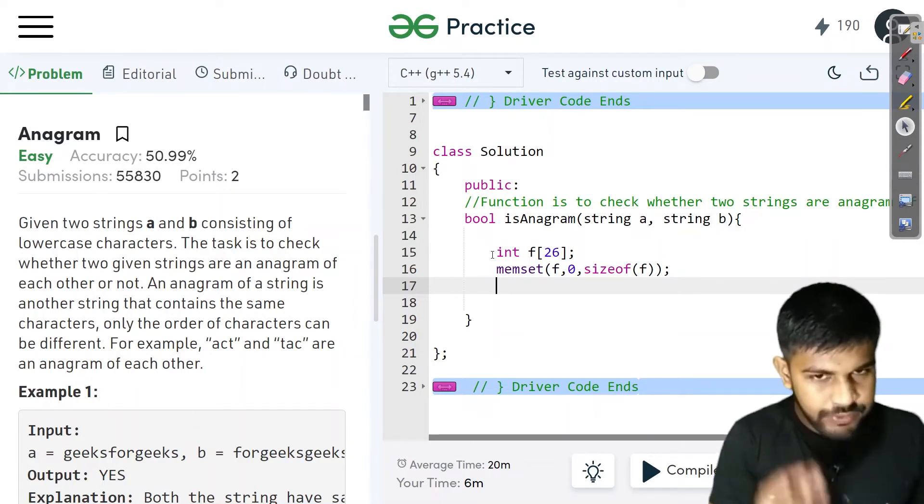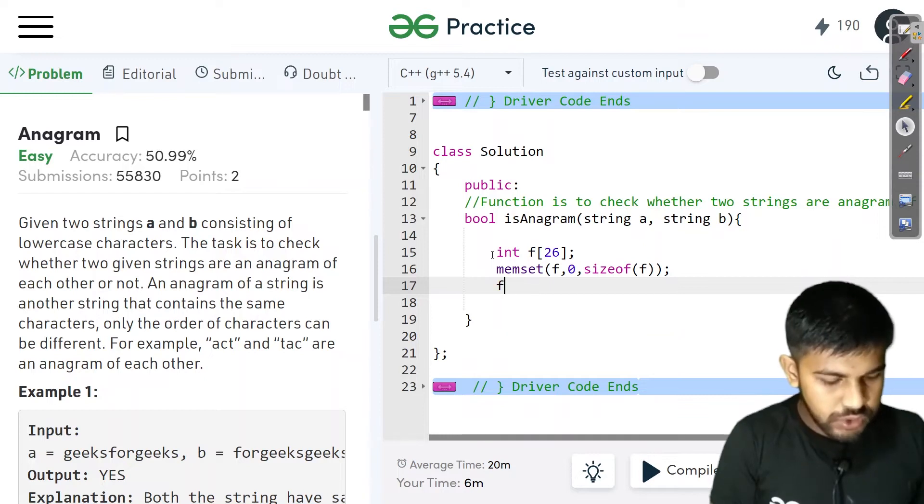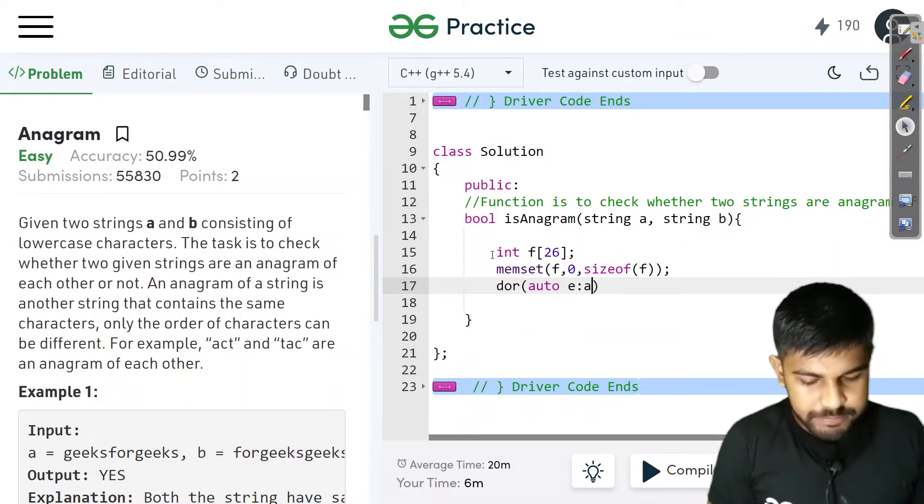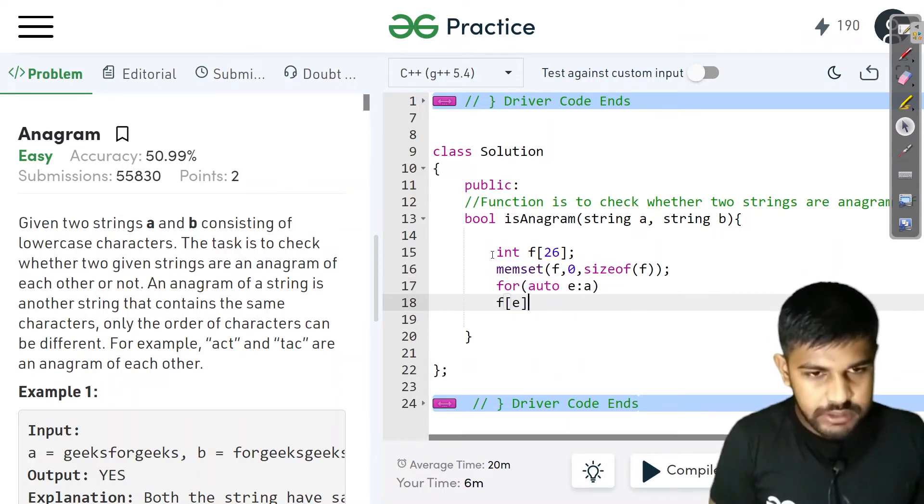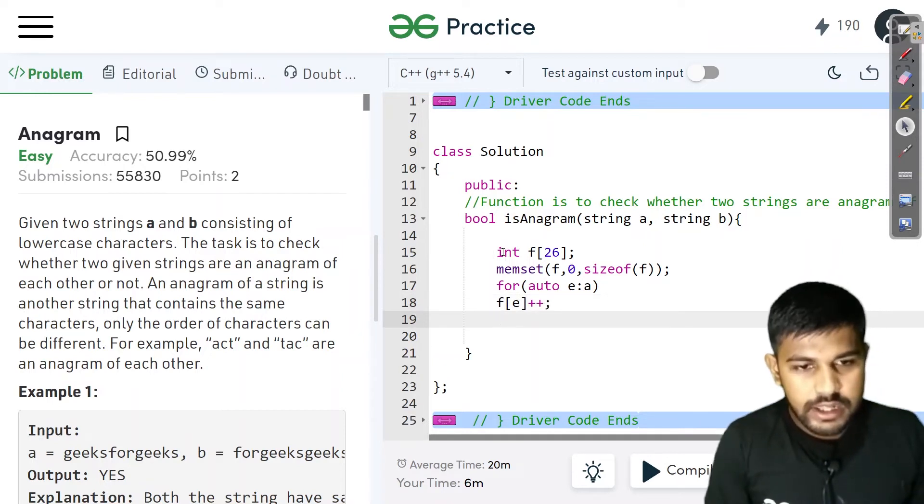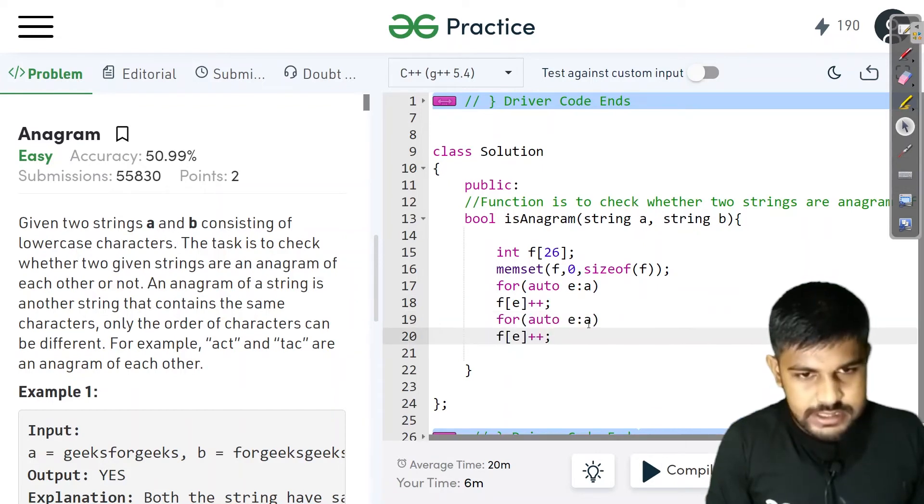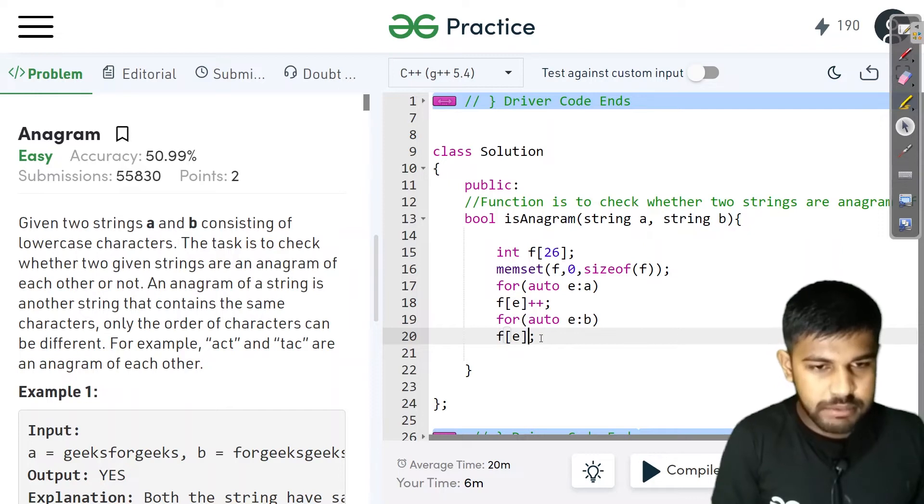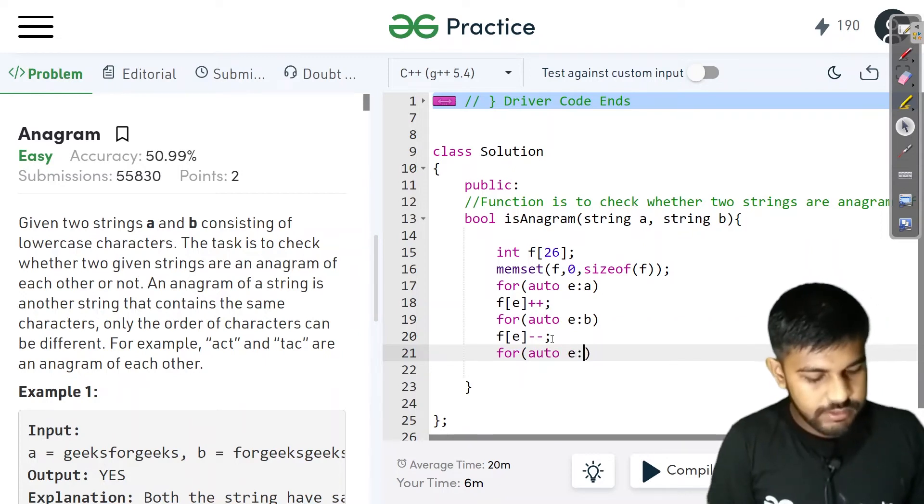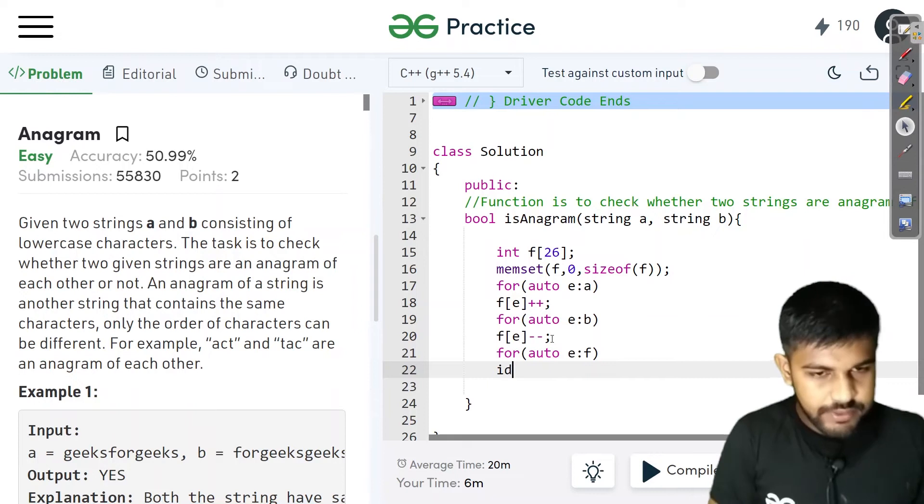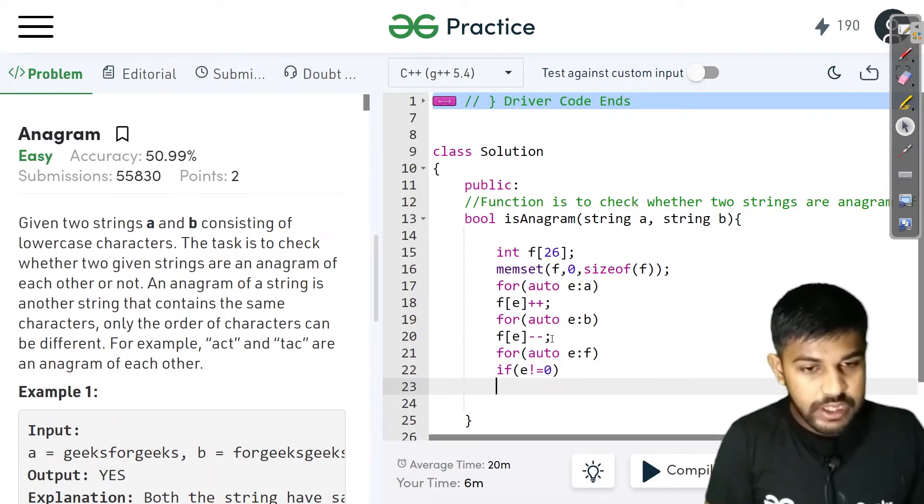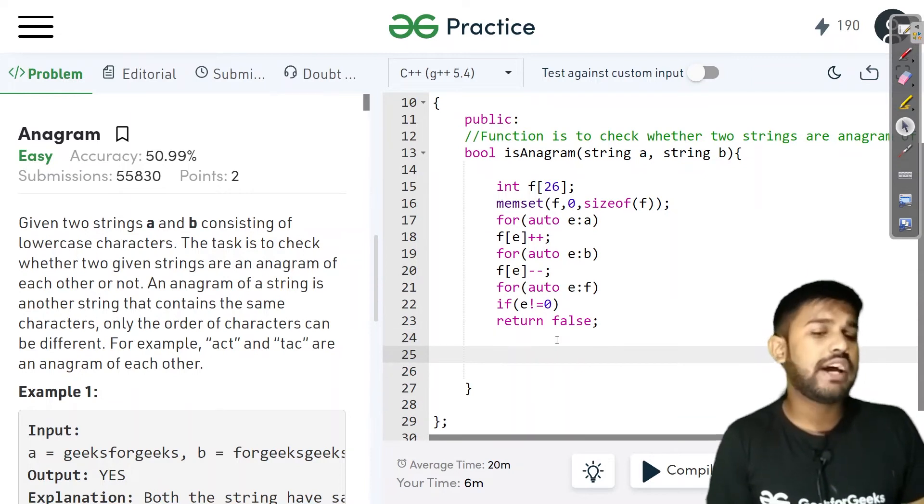Now what you can do is from the first string we would add plus 1. So for auto e in A, this is the for each loop of A. Then f[e] plus plus. Then we would just copy the same thing and paste this. And this would be the second string B. And from the second string we were subtracting 1. After doing all this, we would check the elements of the array itself. If e is anything other than 0, then we return false here. If we didn't find any value and every value is 0, then we return true.